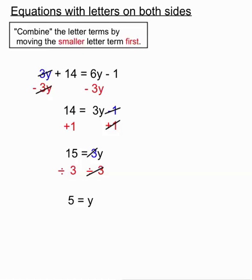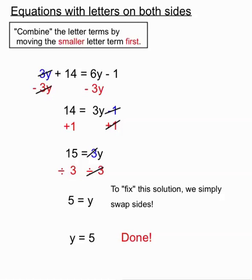Now it seems like that's the final answer but we want the letter to be on the left hand side. To fix this solution, not that hard at all, we simply swap sides. We're allowed to do that. So if 5 equals y, y equals 5 and we're done.